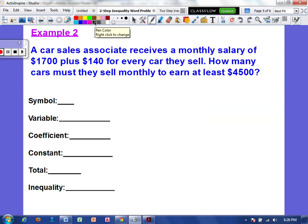Alright. Example two, a car sales associate receives a monthly salary of $1,700 plus $140 for every car they sell. How many cars must they sell monthly to earn at least $4,500?